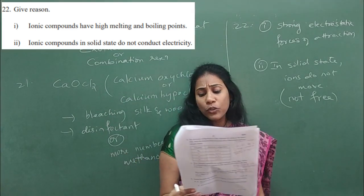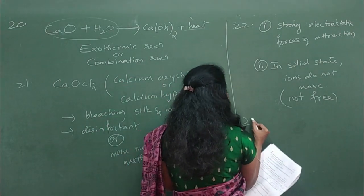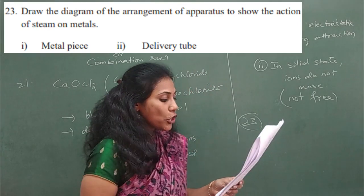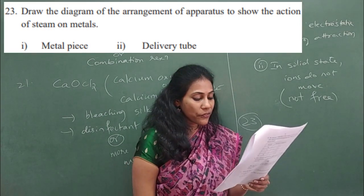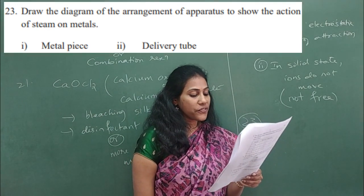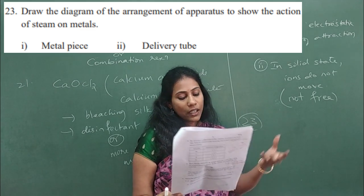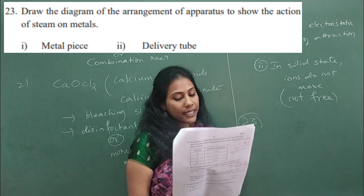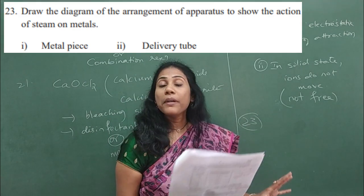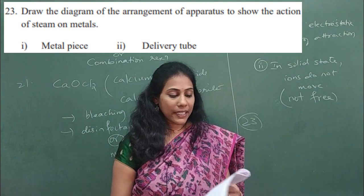Question 23 is again a diagram question: 'Draw the diagram of the arrangement of apparatus to show the action of steam on metals.' You have to label the metal piece and the delivery tube. This diagram is from the metals and non-metals chapter, so you can just practice it.